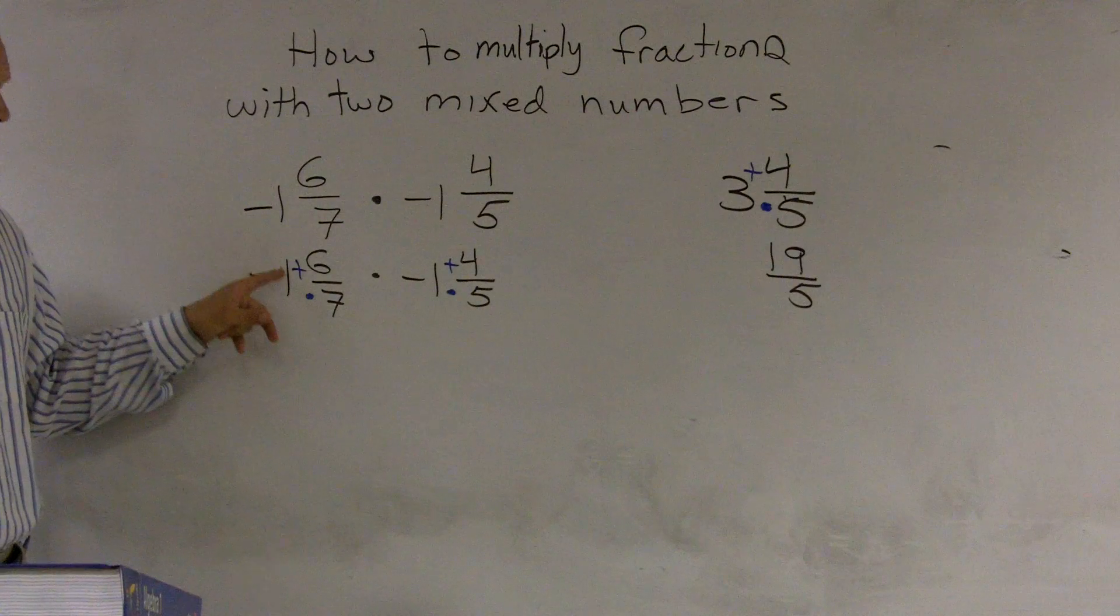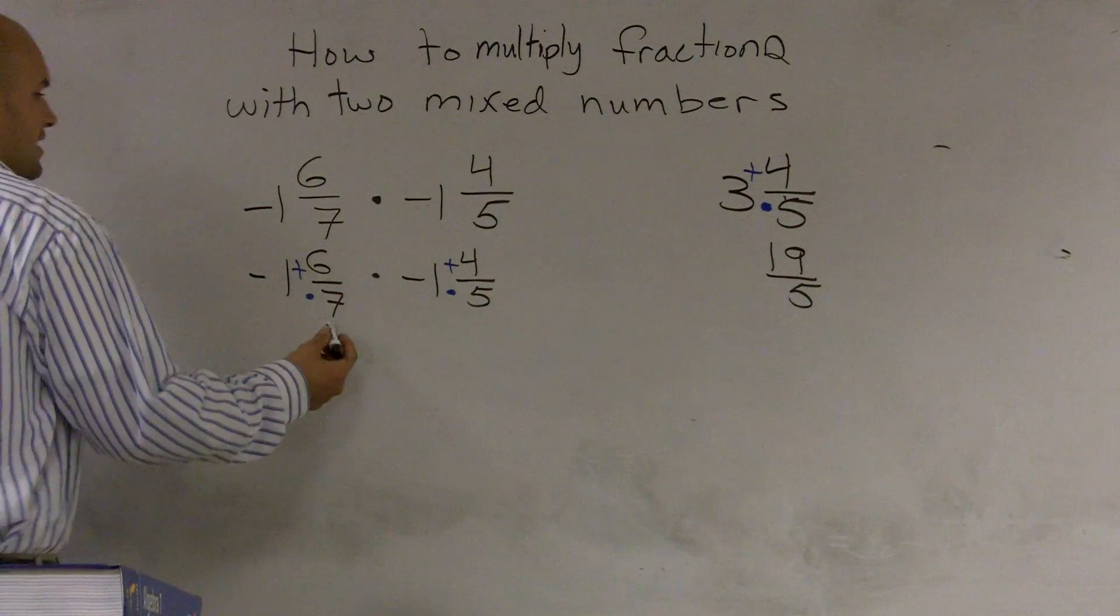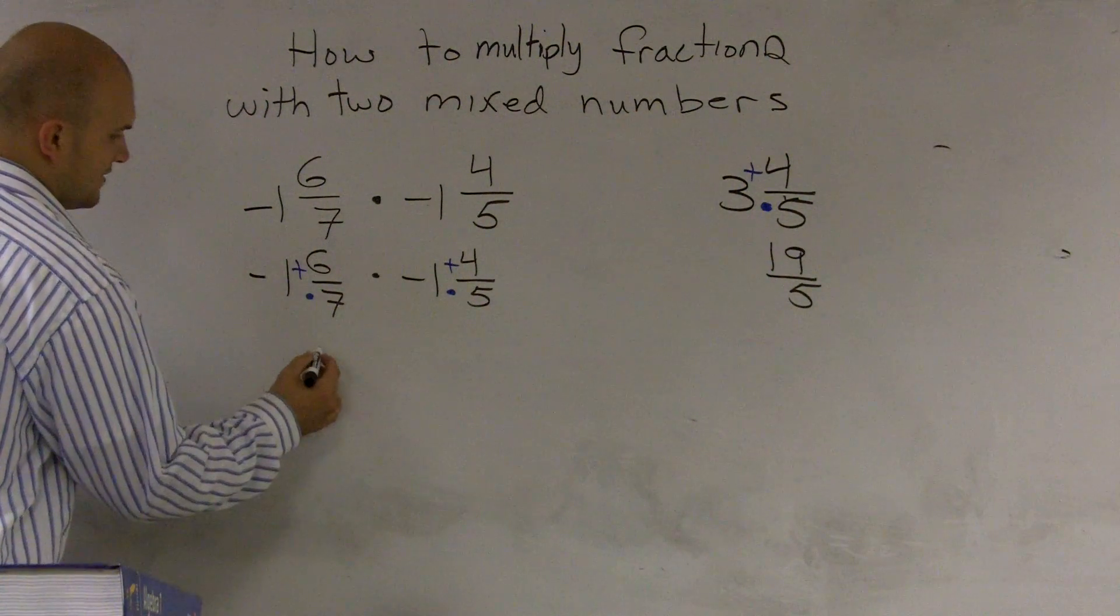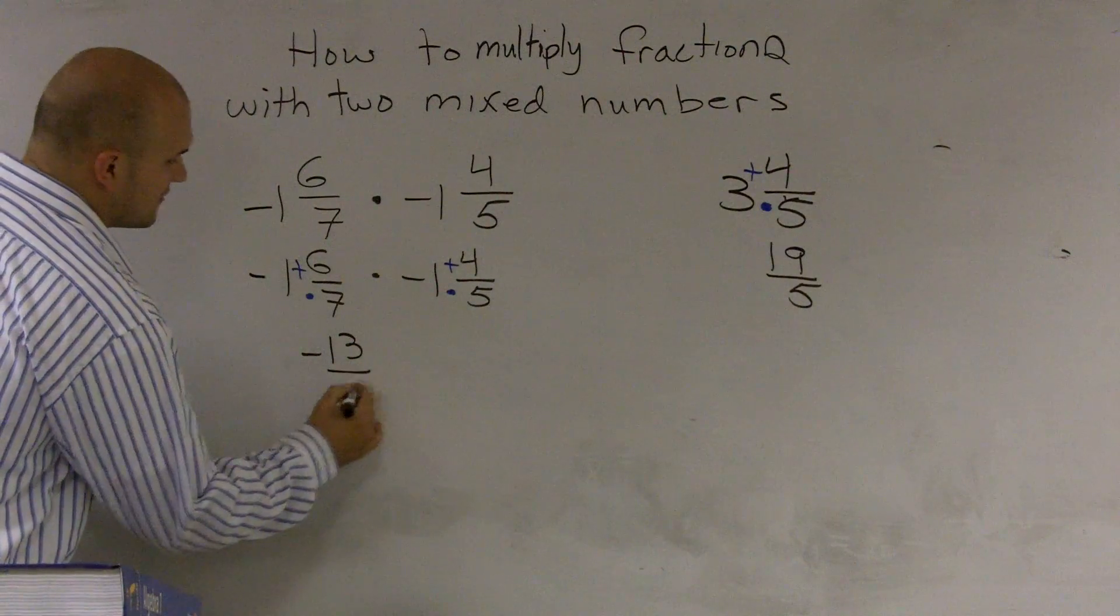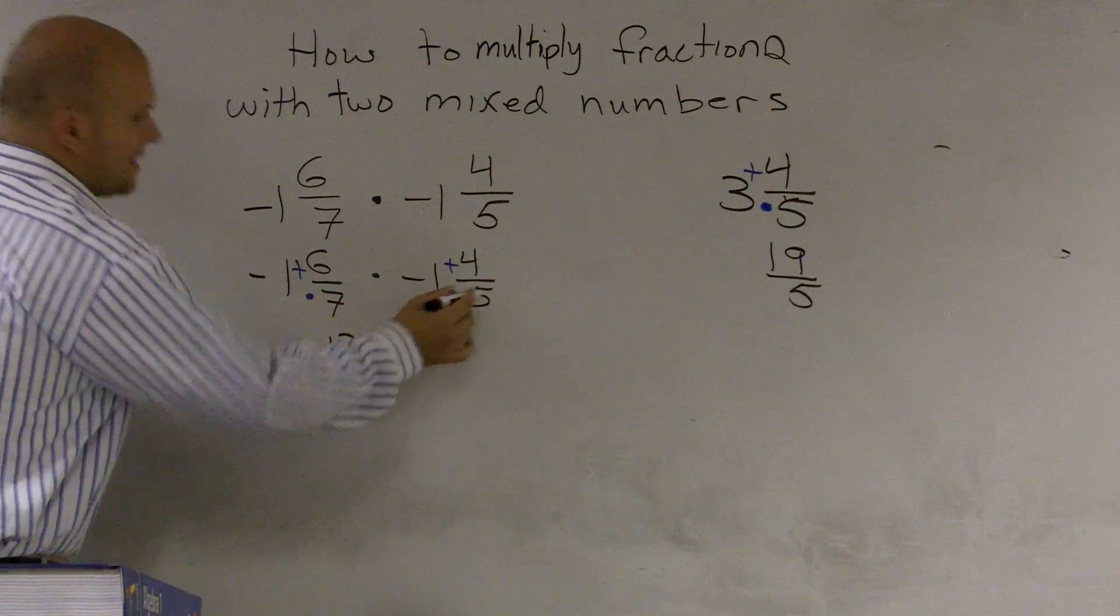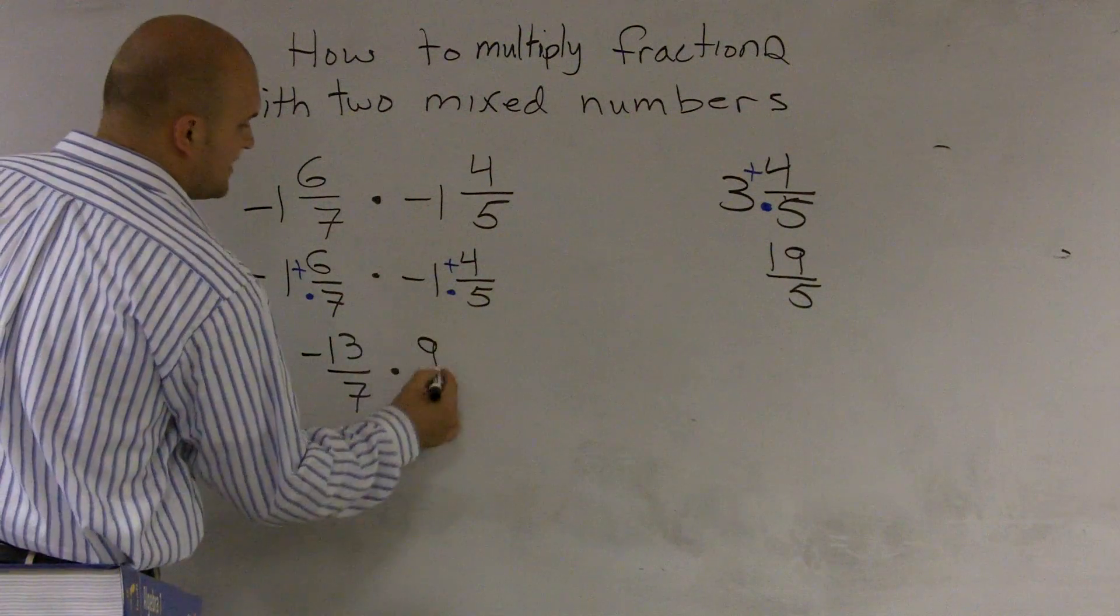So seven times one would be seven plus six is going to be 13 over seven. So it's negative 13 over seven times nine-fifths.